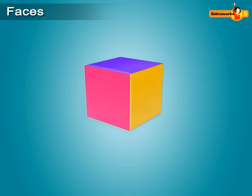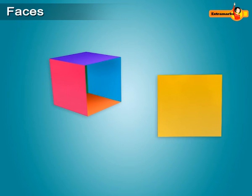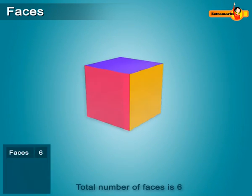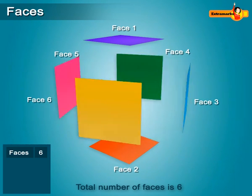The flat surfaces of a solid are called its faces. They are in the form of plane figures. In the given figure, the total number of faces is 6: a top, a bottom, and 4 around the sides.